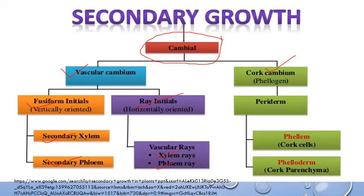The other type of cambium — cork cambium — is formed in the cortex region of the stem or root during secondary growth. It is responsible for the formation of periderm. Periderm consists of three things: cork cambium, cork cells, and cork parenchyma, which we will discuss in detail in upcoming slides.